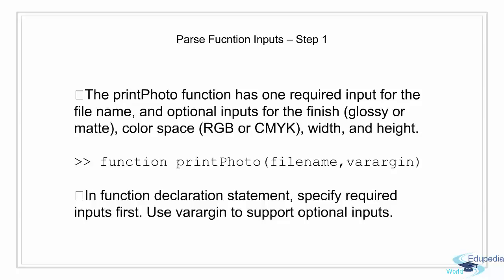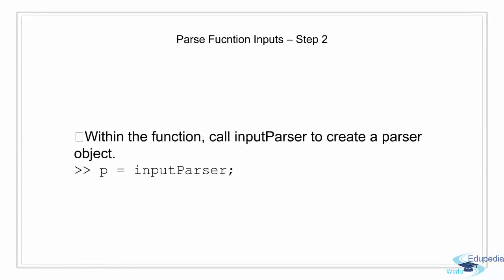Now for parsing function inputs — the reason I created this video was to demonstrate this feature of MATLAB. What I am going to show is how to define required and optional inputs, assign defaults to optional inputs, and validate all these inputs using the input parser. This is divided into seven steps. The first step is to define our function. We are going to create a function named printphoto that has one required input for the file name and optional inputs for finish, color space, width, and height. In the function definition we specify file name as required and for optional inputs we use varargin. The second step is to create an input parser object — we will create an object p that will be an input parser object.